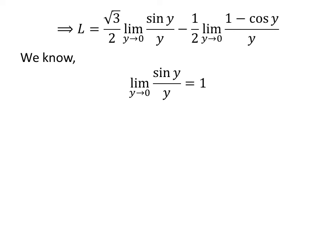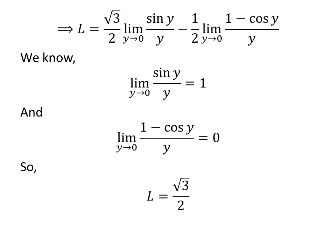We know the limit of sine of y upon y as y approaches 0 is equal to 1. And we also know the limit of 1 minus cosine of y upon y as y approaches 0 is equal to 0. Application of the above statements gives us the limit L is equal to square root of 3 upon 2.